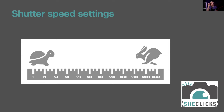Looking at shutter speed settings: starting at one second, each step halves the time — half a second, a quarter, an eighth, a 15th. Logically you'd expect a 16th, but 15th is used — it makes little practical difference. Moving from a 60th to a 30th of a second doubles the amount of light reaching the sensor, increasing exposure and making the image brighter. The principle is the same as ISO: halving and doubling.